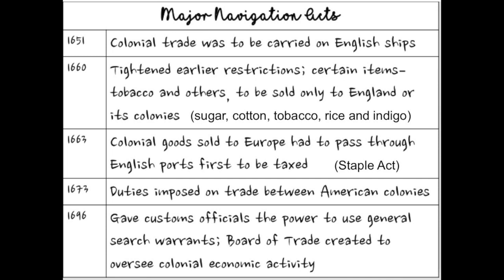Great Britain goes through a series of laws and acts called the Navigation Acts. The first Navigation Act, passed in 1651, requires that all colonial trade was to be carried on English ships. This is a problem for colonists because if they want to do business with the Spanish, the Dutch, or the Portuguese, that would have to be carried on a Spanish, Portuguese, or Dutch ship. Being limited to English ships means they have to pay taxes to England for those ships.